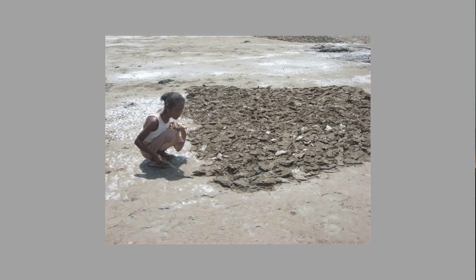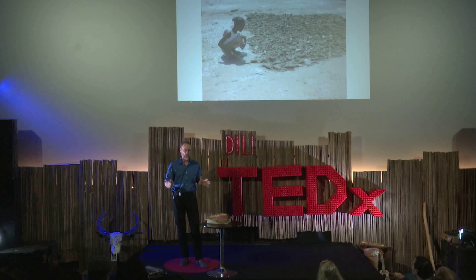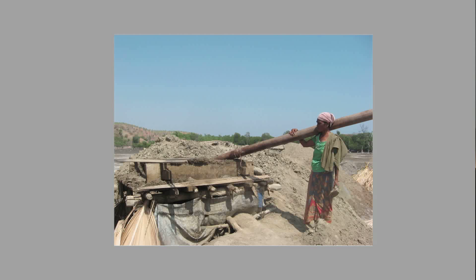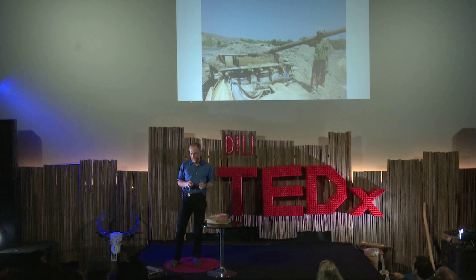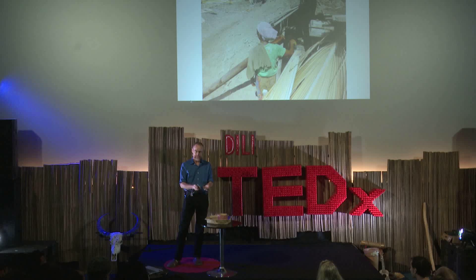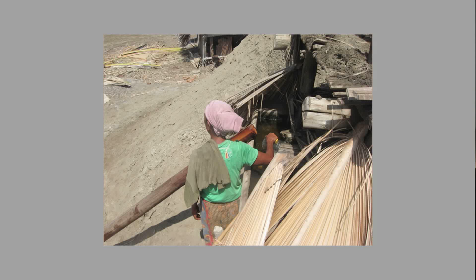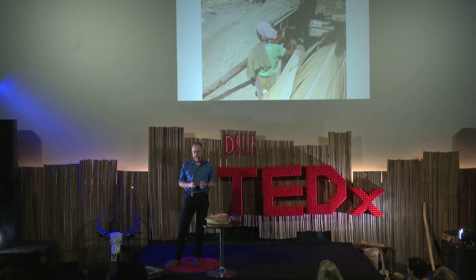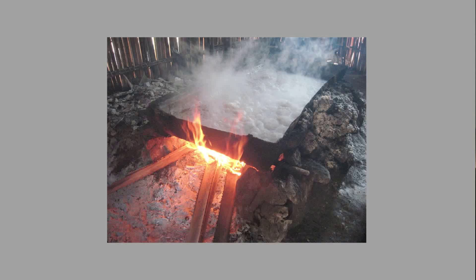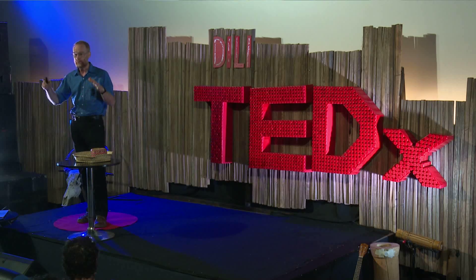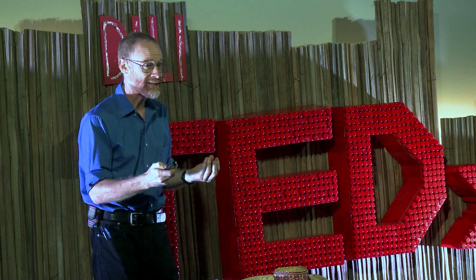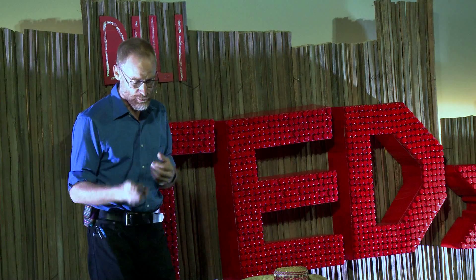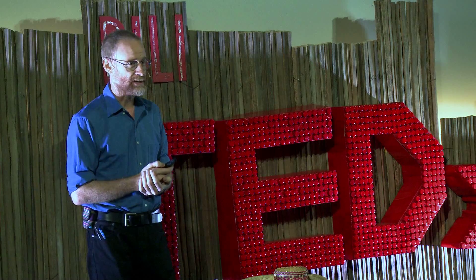Grandma also knows that the dirt near the ocean is loaded with salt. Sometimes the high tide comes up and soaks the dirt. If you take some of that dirt, put it in a structure and wash it, collect the water at the bottom and put it through two or three times, it becomes very salty. Then you take it into the shed, dump it into a tray, and boil it. You can watch the water evaporate and the salt crystallize — and then you've got some nice sea salt to sell.